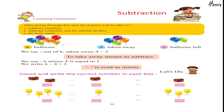Subtraction. Learning outcomes: after going through this unit, the learner will be able to subtract numbers, subtract vertically and by cutting strokes, and do story sums. Six balloons — four taken away — two balloons left. We say: out of six, taken away four equals two. To take away means to subtract. We say: six minus four is equal to two. We write: six minus four equals two. Minus is read as minus. Let's do: count and write the correct number in each box.